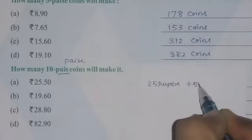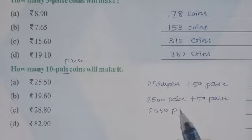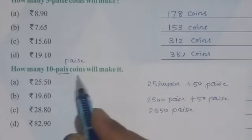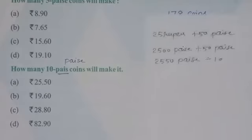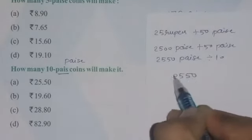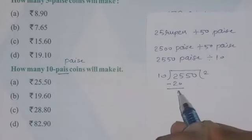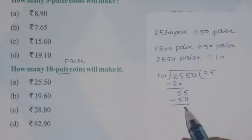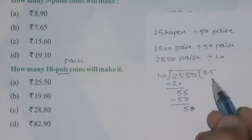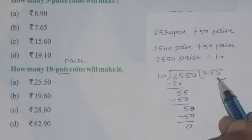Adding these two gives 2550 paise. Now we have to find how many 10 paise coins will make this amount, so divide 2550 by 10. On dividing: 10 twos are 20, subtract to get 5, bring down next digit 5, 10 fives are 50, subtract to get 5, bring down 0, 10 fives are 50, subtract to get 0. The answer is 255, so a total of 255 coins of 10 paise.